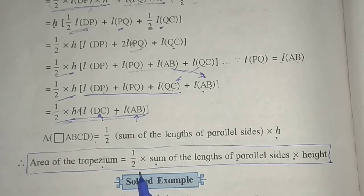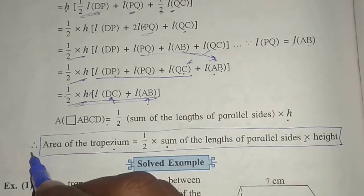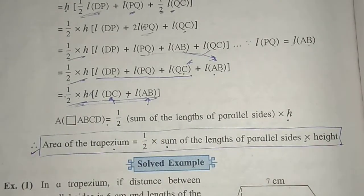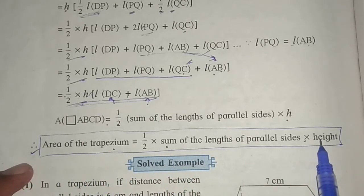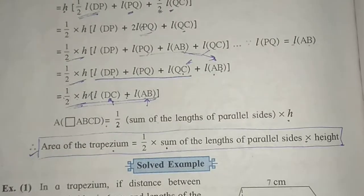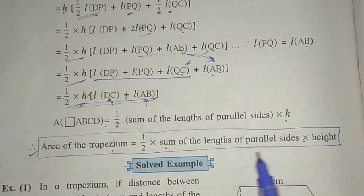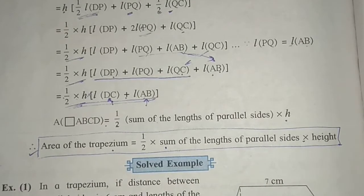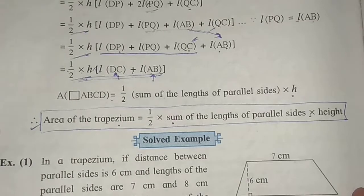So to find the area of a trapezium, you just need to remember this formula: area of trapezium equals one half times sum of the lengths of parallel sides times height. You don't need to repeat the full derivation every time — just use this formula.